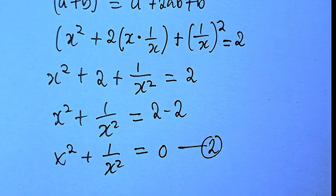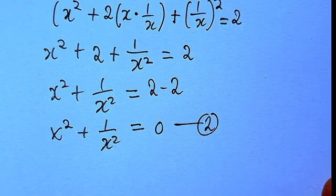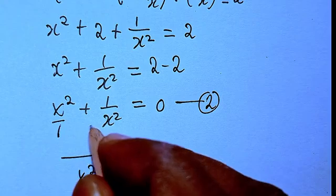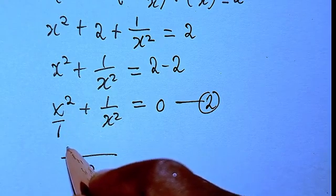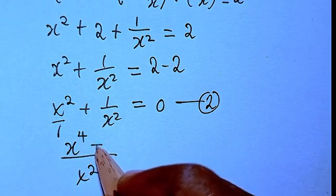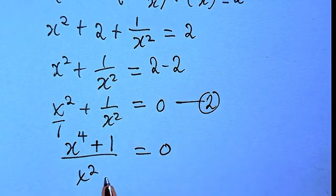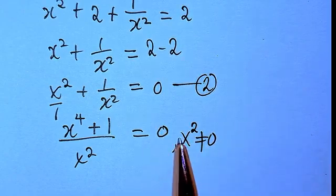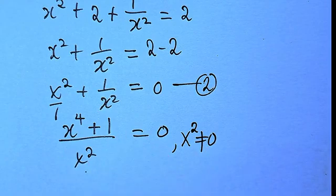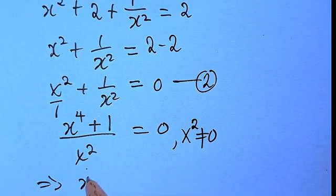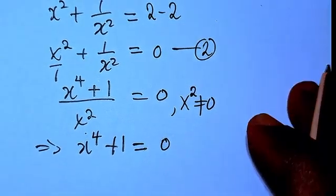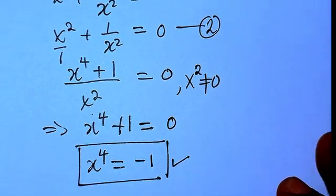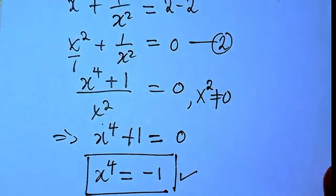Let me write Equation 2 as a single fraction using x² as the LCD: (x⁴ + 1) / x² = 0. Since x² cannot be 0 (that would be undefined), we need x⁴ + 1 = 0, which gives x⁴ = -1. We'll keep this result as we'll use it shortly.